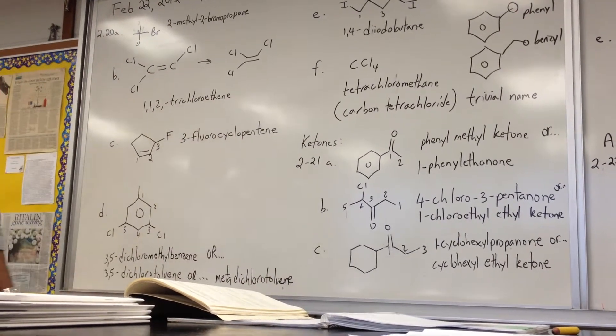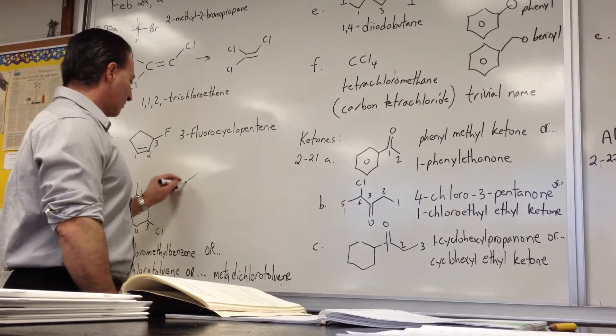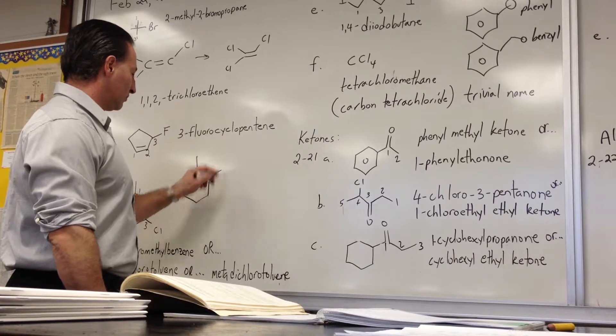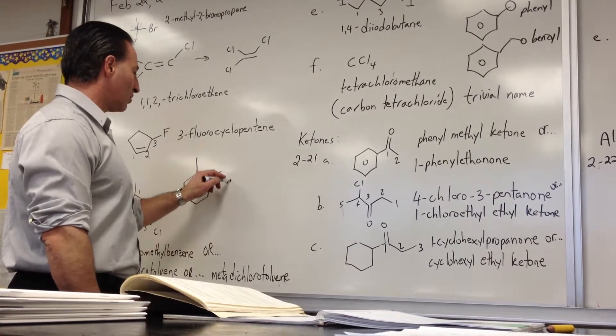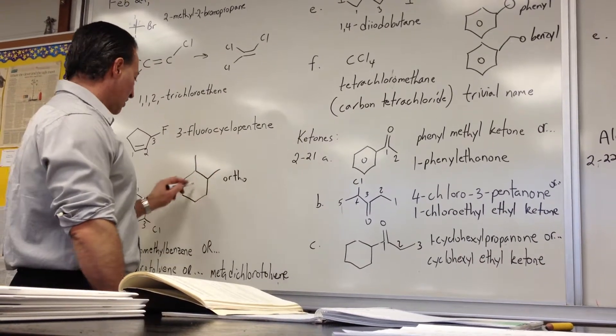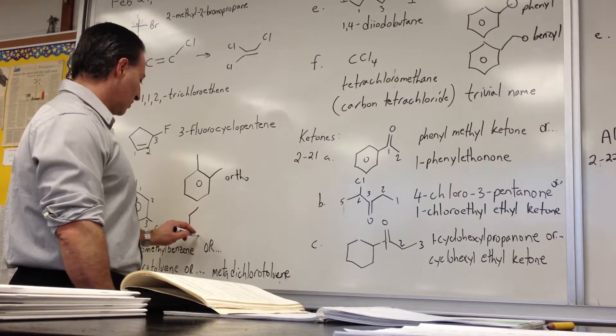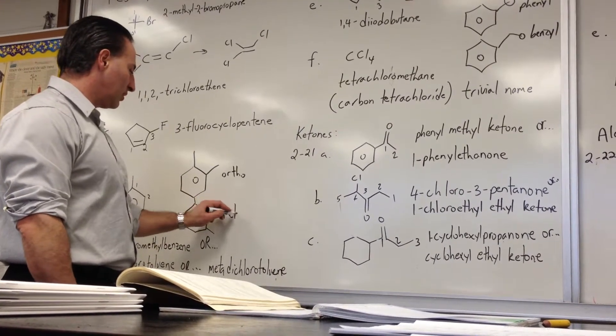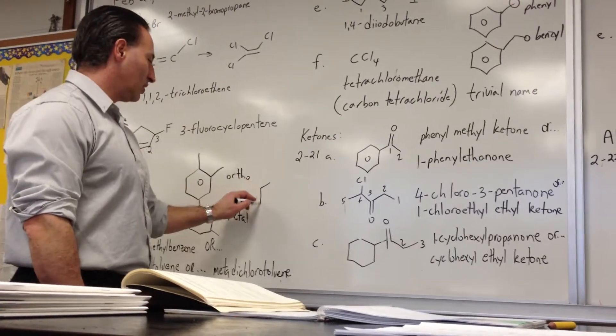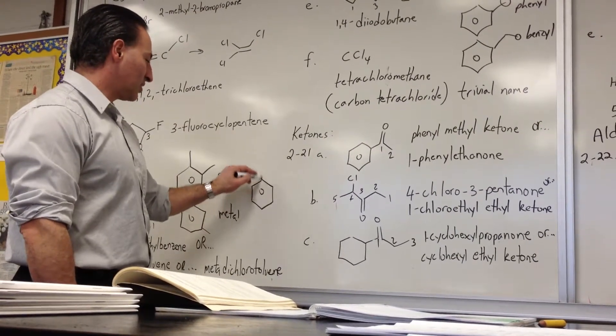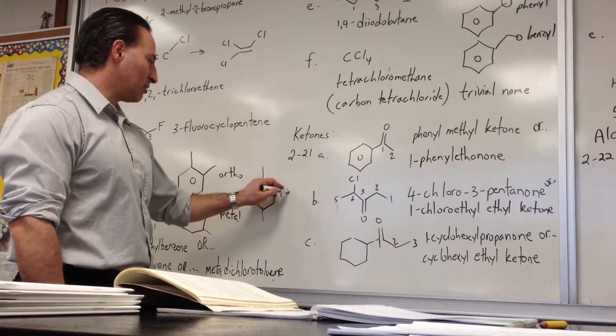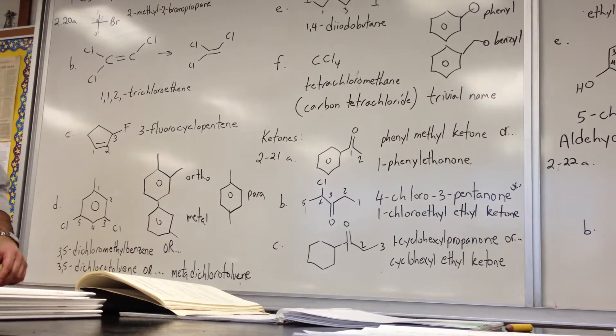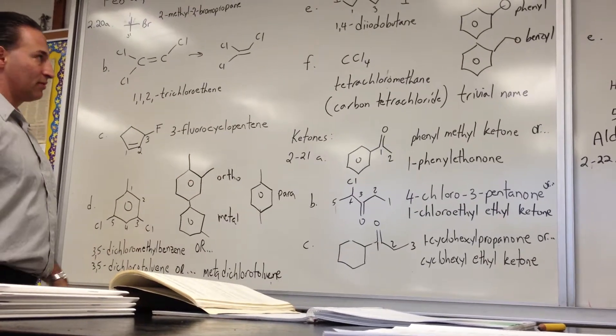Meta meaning that the substituents are located to remove. This would be ortho-substituted. This would be meta-substituted. And lastly, you can have para-dichloro-substituted if they're on the opposite ends of the molecule. That only applies for benzene. Don't use that for anything but benzene.